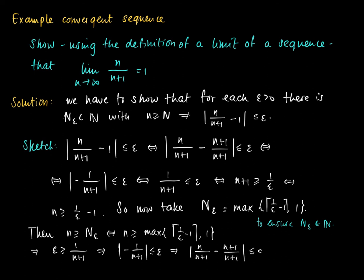Which implies that we trace, follow the arrows back until we find that the absolute value of n divided by n plus 1 minus 1 is smaller or equal than epsilon. Yeah, this is it. So now we're done.